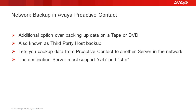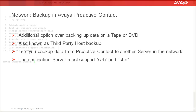A network backup, which is also known as a third-party host backup, is another option for backup over the traditional tapes or DVDs. It lets you back up the data from Proactive Contact to another server in the network, which is also called a third-party host server. It's important to note that this third-party host server must support the SSH and SFTP protocols.